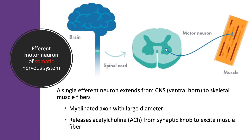The efferent motor neuron of the somatic nervous system is a single neuron extending from the ventral horn to innervate skeletal muscle. These axons are myelinated and have a larger diameter, allowing for faster propagation of nerve signals to skeletal muscle — necessary to initiate quick voluntary actions. These efferent motor neurons release acetylcholine from their synaptic knobs to excite muscle fibers.